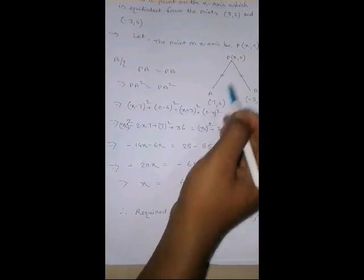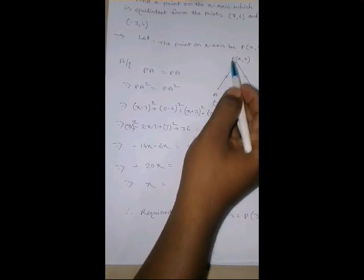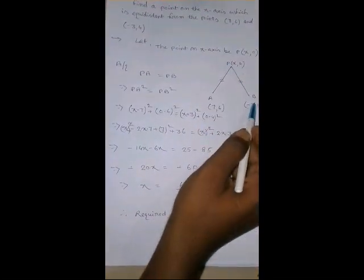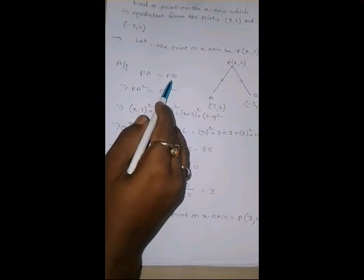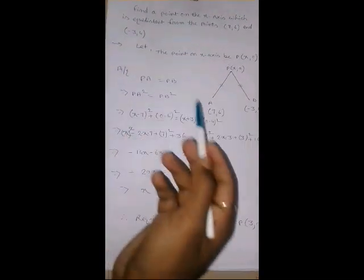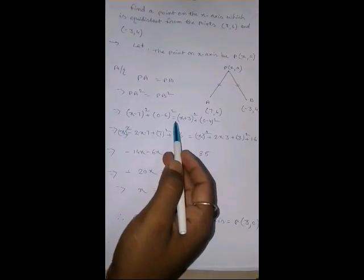What is given in the question? That this point is equidistant from A and B. That is, PA equal to PB. Now, do the square on both sides. PA square equal to PB square. And, then, just simply use the formula of distance.